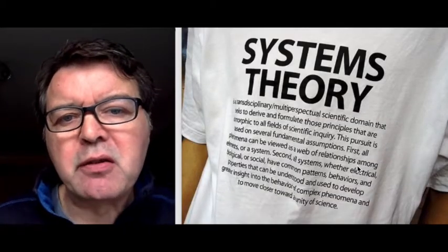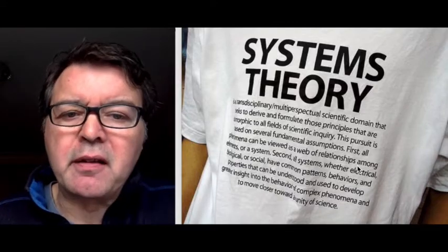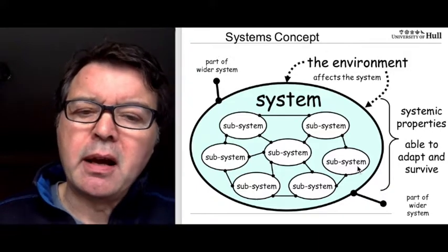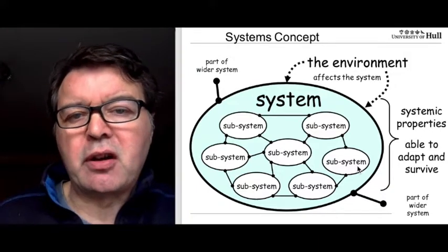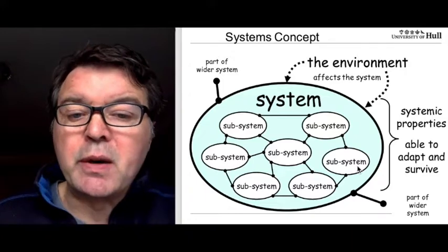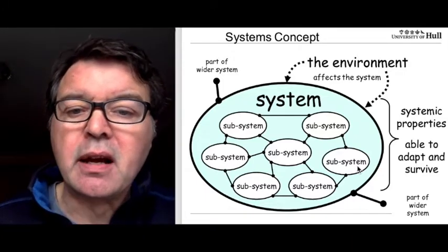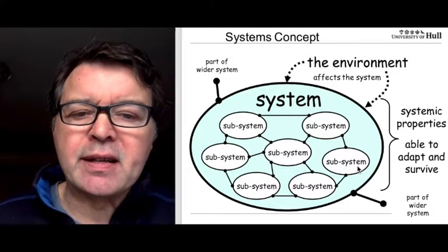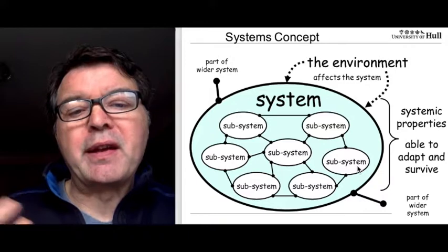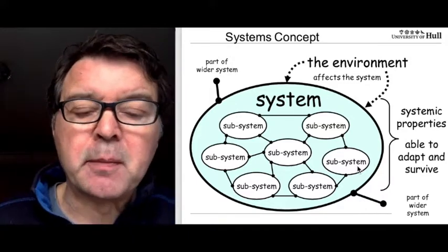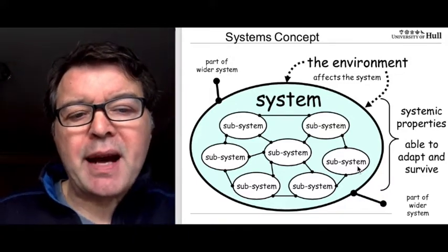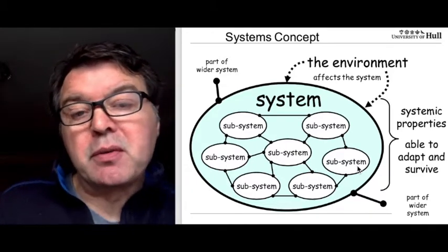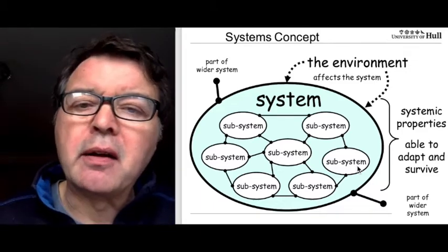We haven't got time in this video to really get into systems theory because it's very complicated, but using a general system concept: a system is thought of as containing subsystems which are connected together and have relationships, and the system is part of a wider, larger system. The system also exists within an environment which affects it, and the system has systemic properties — things like being able to adapt and survive.